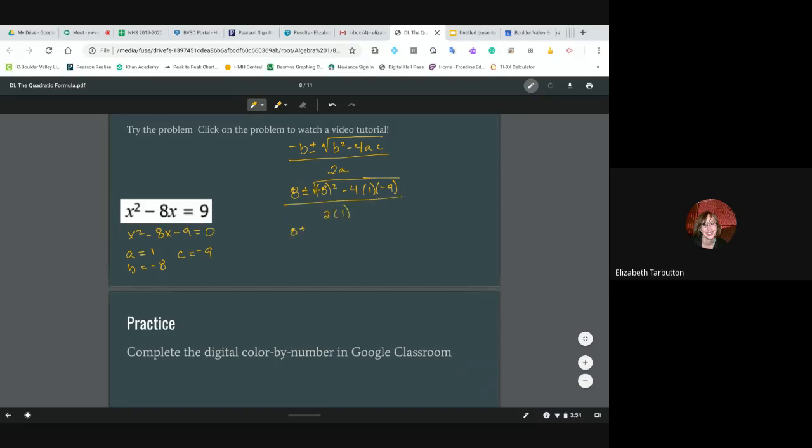So we get 8 plus or minus the square root of 64 plus 36, all over 2. That's 8 plus or minus the square root of 100 over 2. The square root of 100 is 10 over 2.